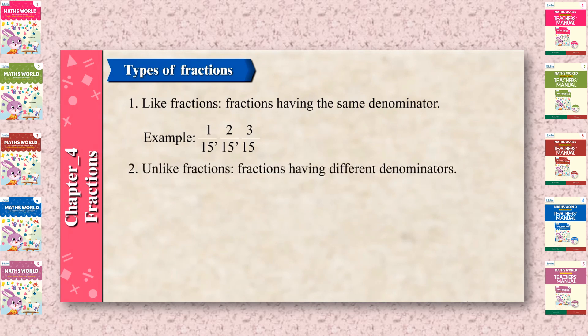Unlike fractions: fractions having different denominators. Example: 2 upon 7, 3 upon 8, 5 upon 9.